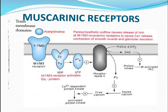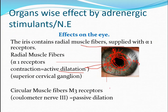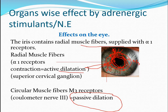With atropine present, the pupil will dilate. The acetylcholine is removed from the M3 receptor sites and atropine occupies them as an antagonist. This causes loss of circular muscle tone, and loss of this tone leads to expansion of the pupil — this is called passive dilation. So active dilation is through adrenergic agonists, and passive dilation is through atropine.